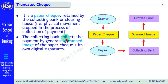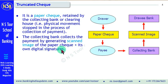The collecting bank collects the payment by generating a scanned image of the paper check, and it adds its own electronic signature to that for authentication purposes. This type of check is called a truncated check.